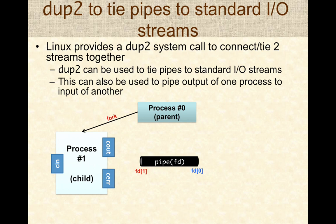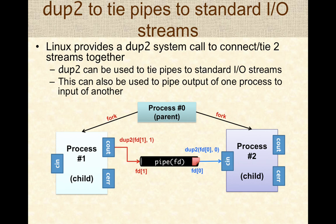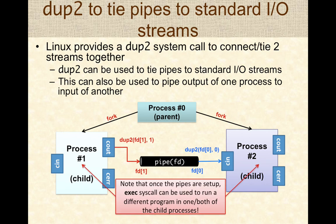The parent will fork to create the first child process, then fork again to create the second child process. Process one will use dup2 to duplicate its standard output to the write end of the pipe, and process two will use dup2 to tie the read end of the pipe to standard input. Essentially, cout is wired to one end of the pipe and the other end is tied to cin. Once set up, processes can send data from one to another. The exec system call can then be used to run a different program in either child process, enabling two different programs to communicate via pipes.